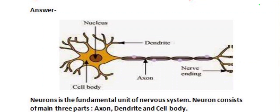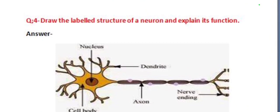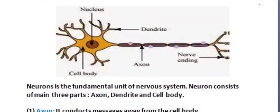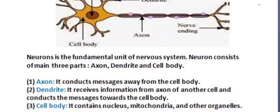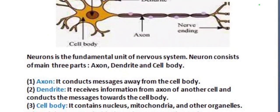Now we come to the functions of a neuron. A neuron is the fundamental unit of the nervous system, consisting of three main parts: axon, dendrite, and cell body. The function of the axon is that it conducts messages away from the cell body.